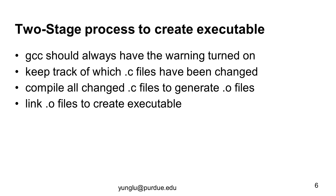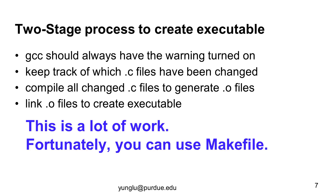Let's review what we've discussed about the two-stage process to convert text files to an executable. First, we have to ensure that all the relevant GCC warnings are turned on — these warnings are very effective at detecting mistakes. We need to keep track of which .c files have been changed since their corresponding object files were created. If a .c file has been changed, the corresponding object file needs to be generated. All the object files need to be linked together to create the executable. This is a lot of work to do by hand, but fortunately a lot of it can be automated using Makefile.